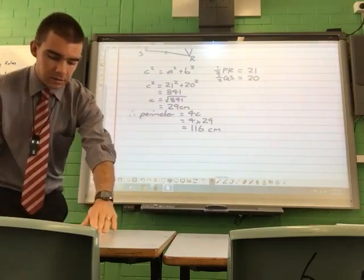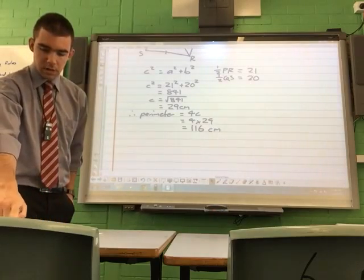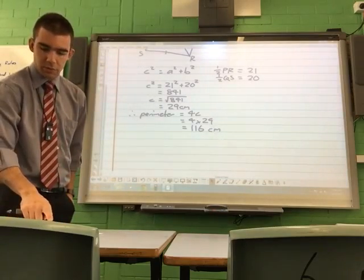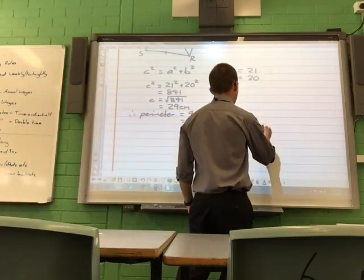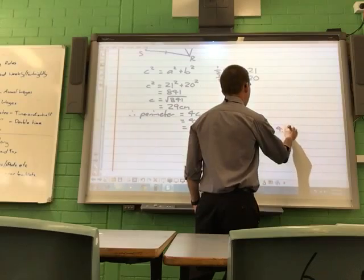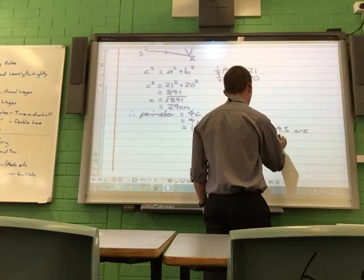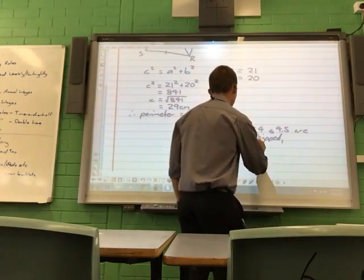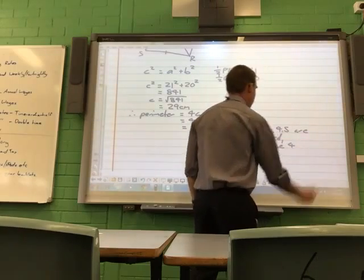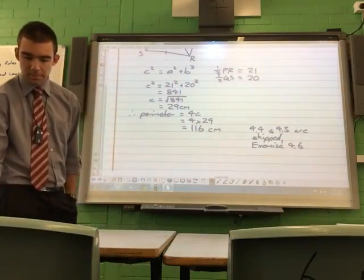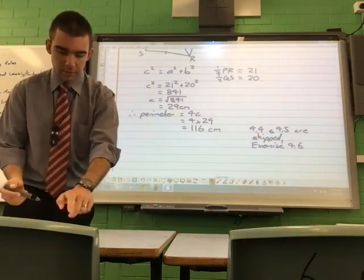Okay, so any questions on that? We've done 4.3. Alright, so 4.4 and 4.5 are skipped for now. Okay? So you don't need to do that. Okay? But we are up to exercise 4.6. 4.5, 4.6. Okay? So, we've done so far 4.1, 4.2, 4.3. We are now done 4.6.